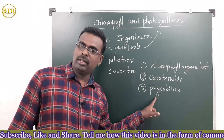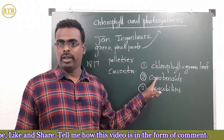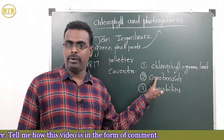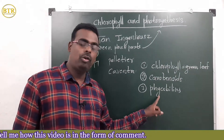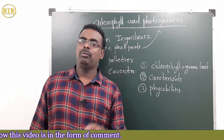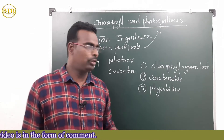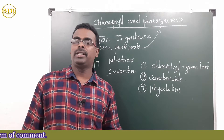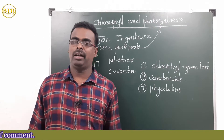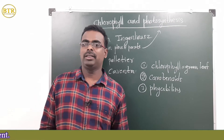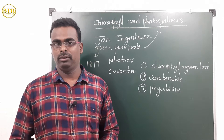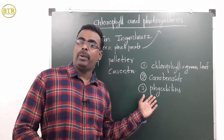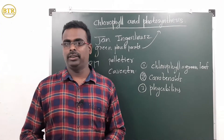Carotenoids are the orange and yellow colored pigments, and phycobilins are the red and blue colored pigments. Due to the presence of carotenoids and phycobilins, leaves appear in different colors. Scientists also found that chlorophyll plays a main role in photosynthesis.